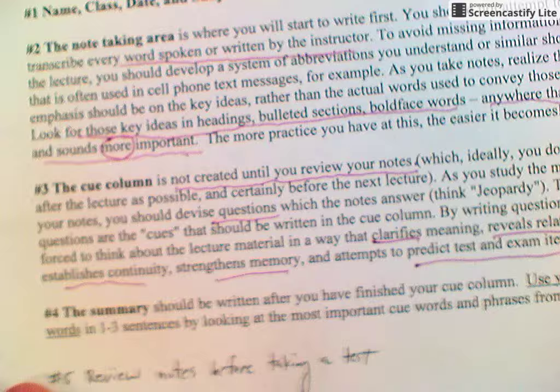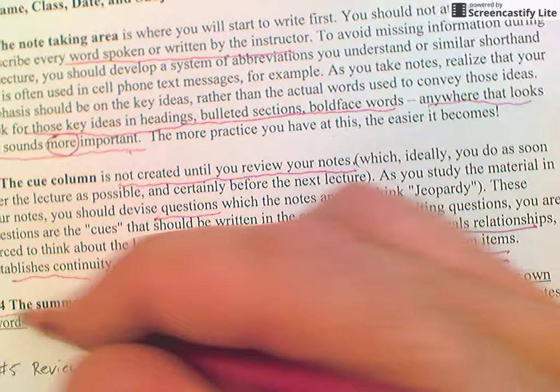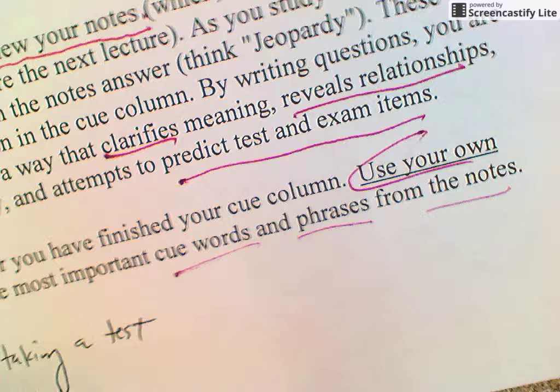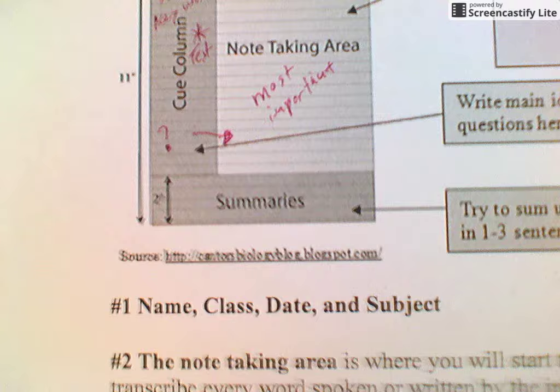The last section is the summary. What you want to try to do is give your own words in one to three sentences by looking at the most important keywords and phrases from the notes. You really want to pull those important phrases and words together into an effective summary.